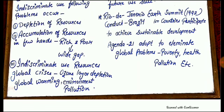The third point is that indiscriminate use of resources will give rise to global crisis — like ozone layer depletion, global warming, and environment pollution. If we use resources in huge quantities, there will be environment pollution. As we are using coal and petrol in huge quantities for transportation, it is causing environment pollution, ozone layer depletion, and global temperature is also increasing day by day. So indiscriminate use of resources can result in such problems.